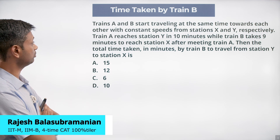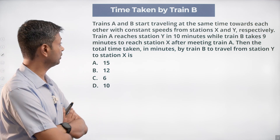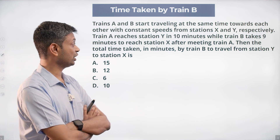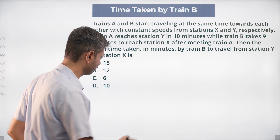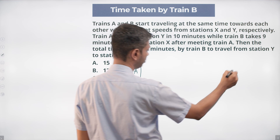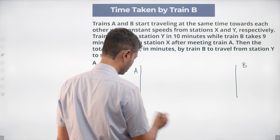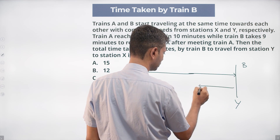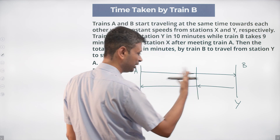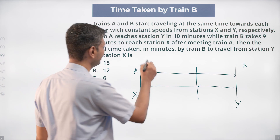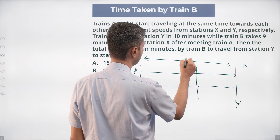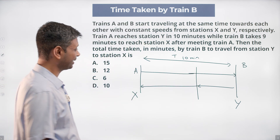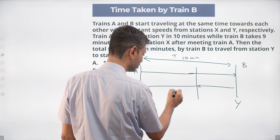Trains A and B travel at the same time towards each other with constant speeds from stations X and Y respectively. Train A reaches Y in 10 minutes, while Train B takes 9 minutes to reach station X after meeting. Train A starts from X, Train B starts from Y. The total time taken by Train A is 10 minutes, and Train B takes 9 minutes for the remaining distance after the meeting point.